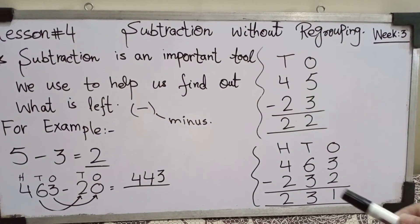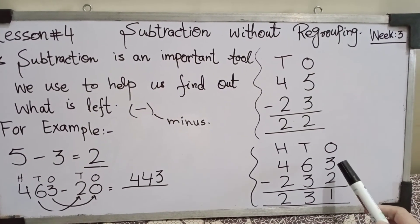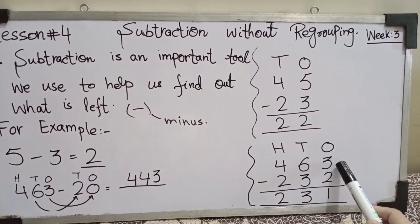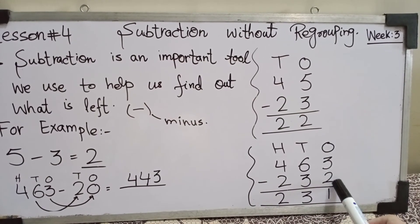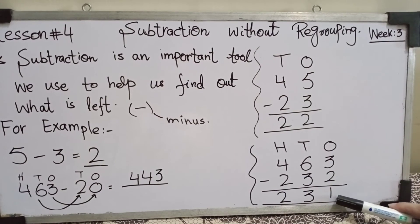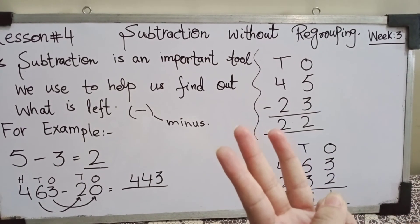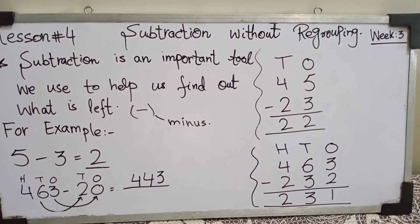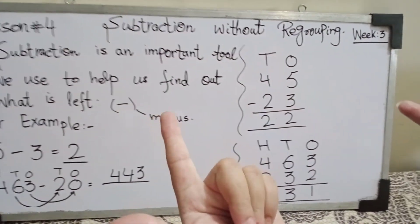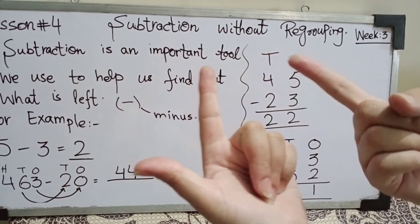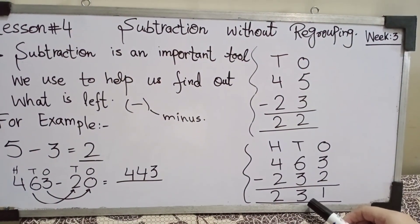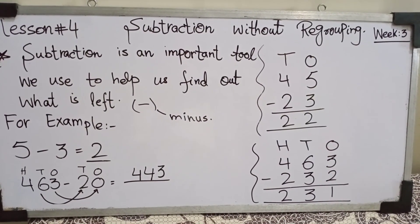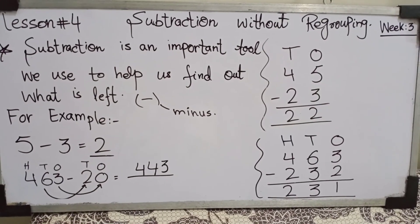اسی طرح آپ کے پاس 3-digit numbers کی subtraction بھی ہو سکتی ہے — hundreds, tens, and ones place۔ 463 میں سے 232 minus کرنی ہے۔ Ones place سے start: 3 minus 2 equals 1۔ Tens place: 6 minus 3 equals 3۔ Hundreds place: 4 minus 2 equals 2۔ I hope you can do this easily now. Thank you, have a nice day!